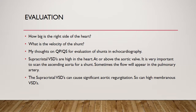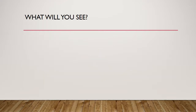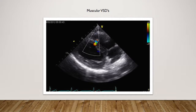One of the complications of VSDs near the aortic valve is that they will almost always cause aortic regurgitation, and the AR will get worse over time. So they want to fix these kids as quickly as possible — to stiffen up that part of the septum so the aortic leaflet has something to hold onto and be supported.